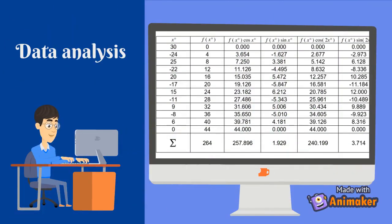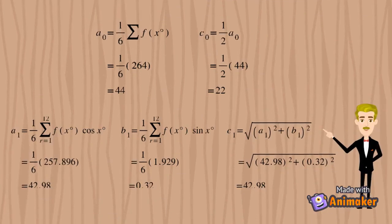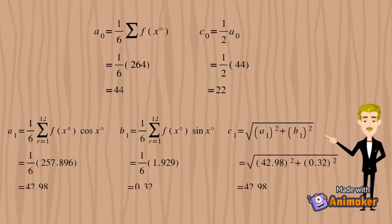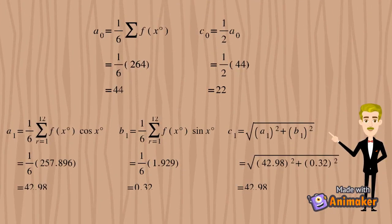For data analysis, the screen on the PC shows the data that we calculated based on our observation of the playground swing motion. These are the formulas we have used to further analyze the data we obtained. There are a lot of parameters that need to be calculated in order to form a complete harmonic equation.